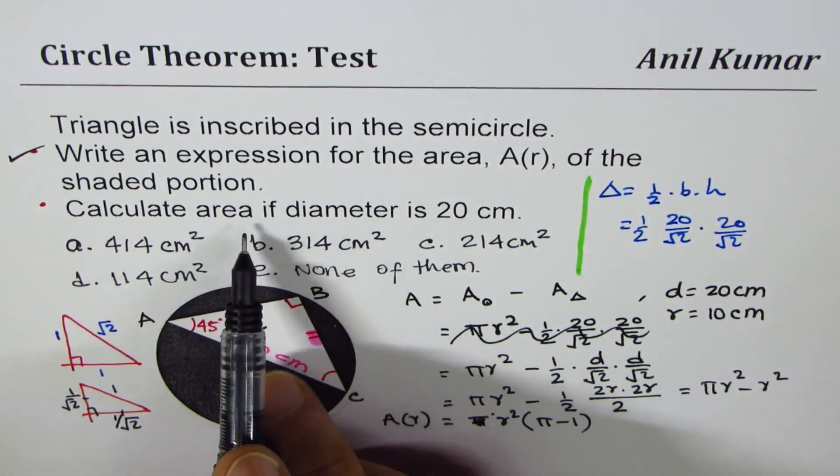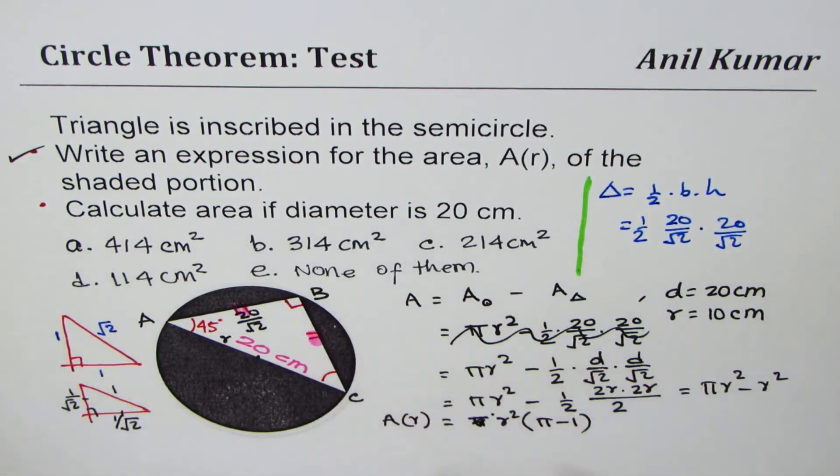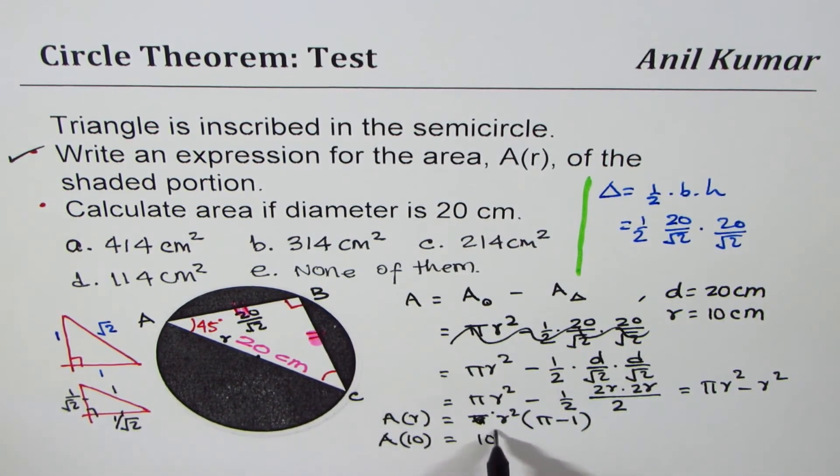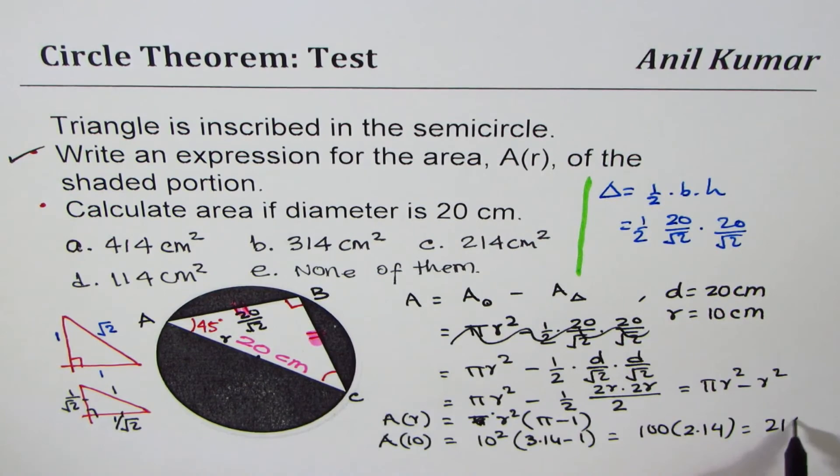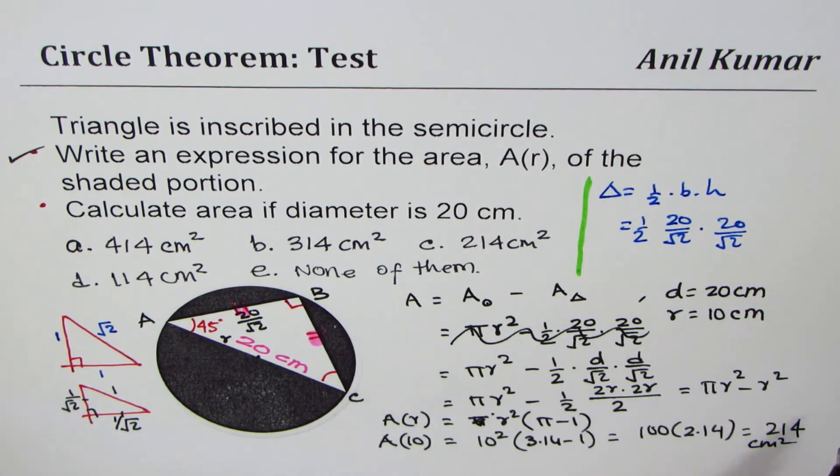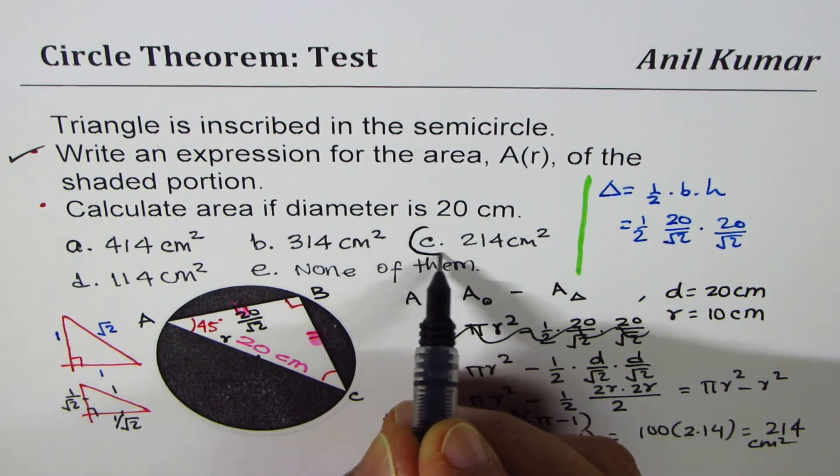Now let's calculate the area if diameter is 20. Let's do the next part. So area when diameter is 20 means radius is 10. Will be 10 squared times pi is 3.14 minus 1. So it becomes 100 times 2.14 or 214. And the units will be centimeters square. So c is the right option.